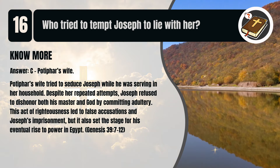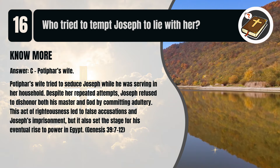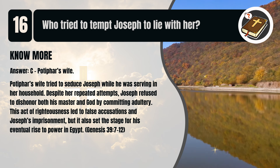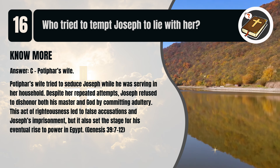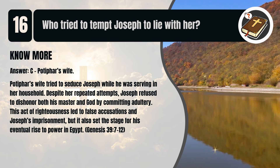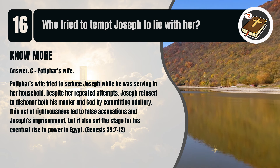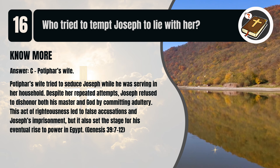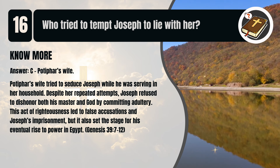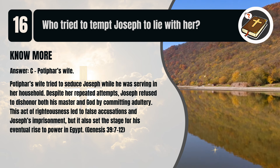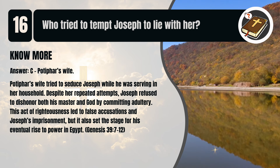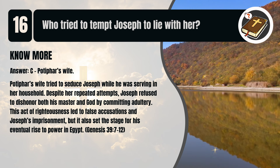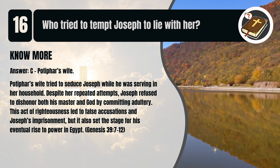That's C. Potiphar's wife. Potiphar's wife tried to seduce Joseph while he was serving in her household. Despite her repeated attempts, Joseph refused to dishonor both his master and God by committing adultery. This act of righteousness led to false accusations and Joseph's imprisonment, but it also set the stage for his eventual rise to power in Egypt. Genesis chapter 39 verses 7 to 12.